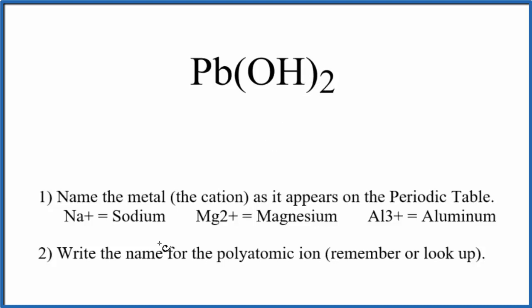So first, we write the name for the metal. That's Pb, which is just lead. Next, we write the name for the polyatomic ion. That's the hydroxide ion, OH, so we just write hydroxide. At this point, we have lead hydroxide as the name for Pb(OH)2.